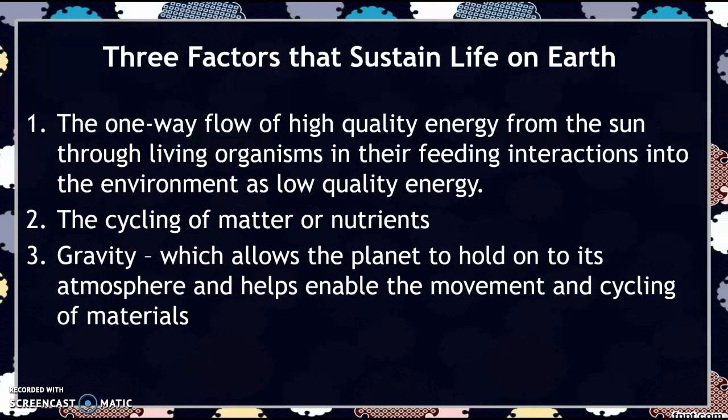There are three factors that sustain life on Earth. The first factor is the one-way flow of high-quality energy from the Sun through living organisms and their feeding interactions into the environment as low-quality energy. Second, there's a cycling of matter or nutrients. Third, gravity — which is super important because it allows the planet to hold on to its atmosphere and helps enable the movement and cycling of materials.